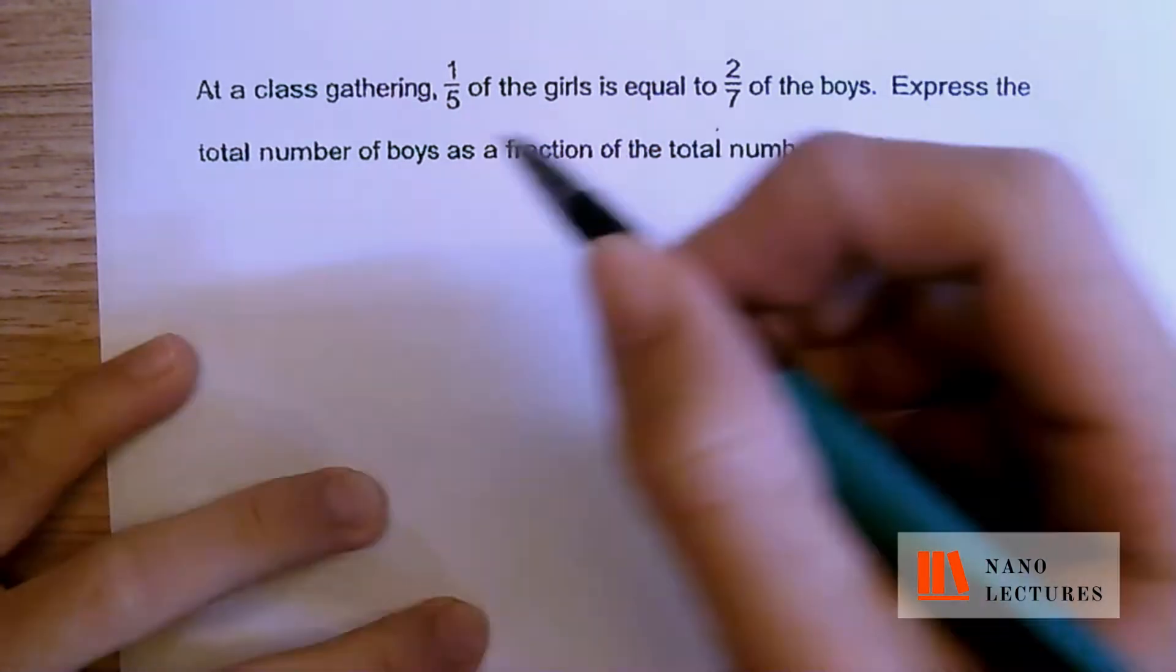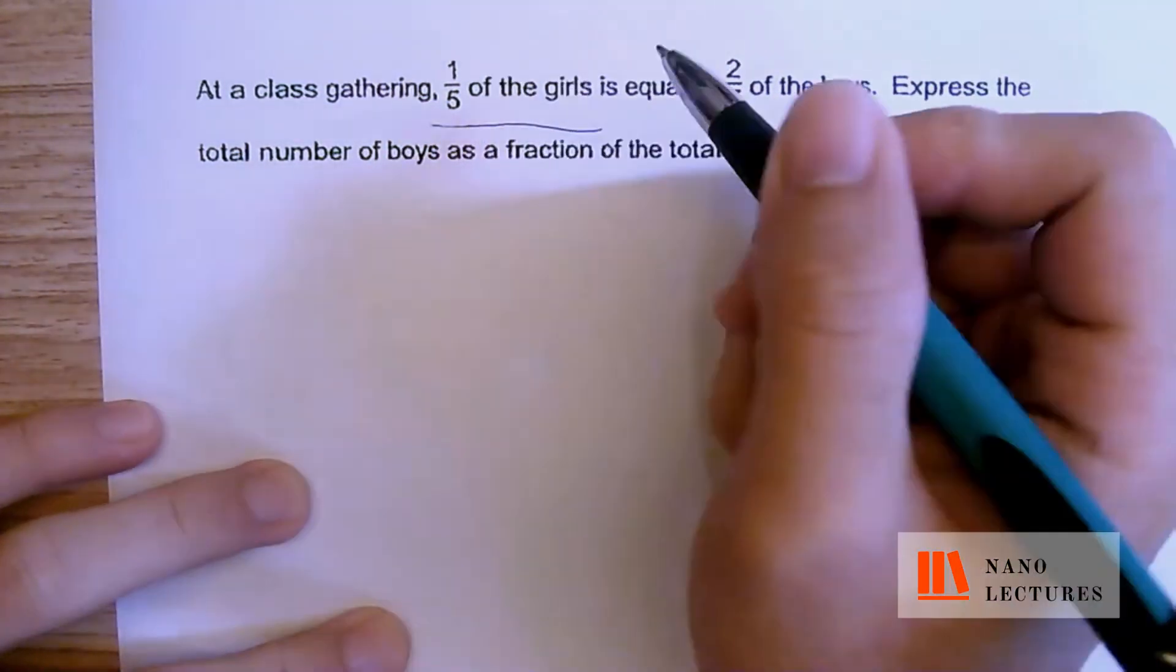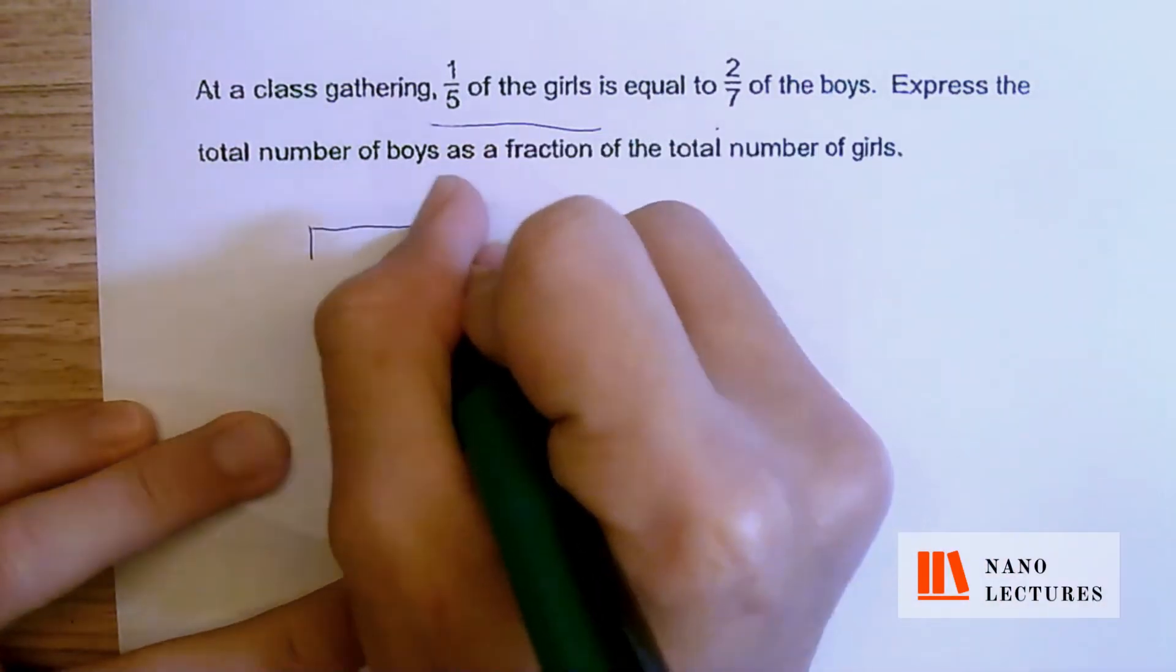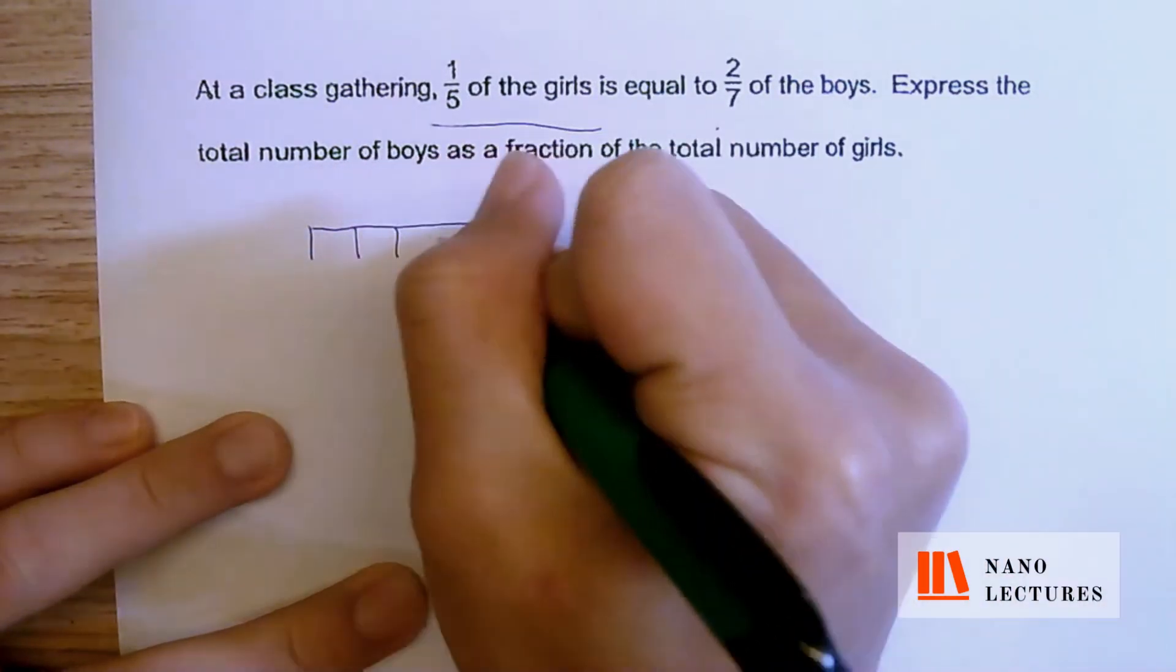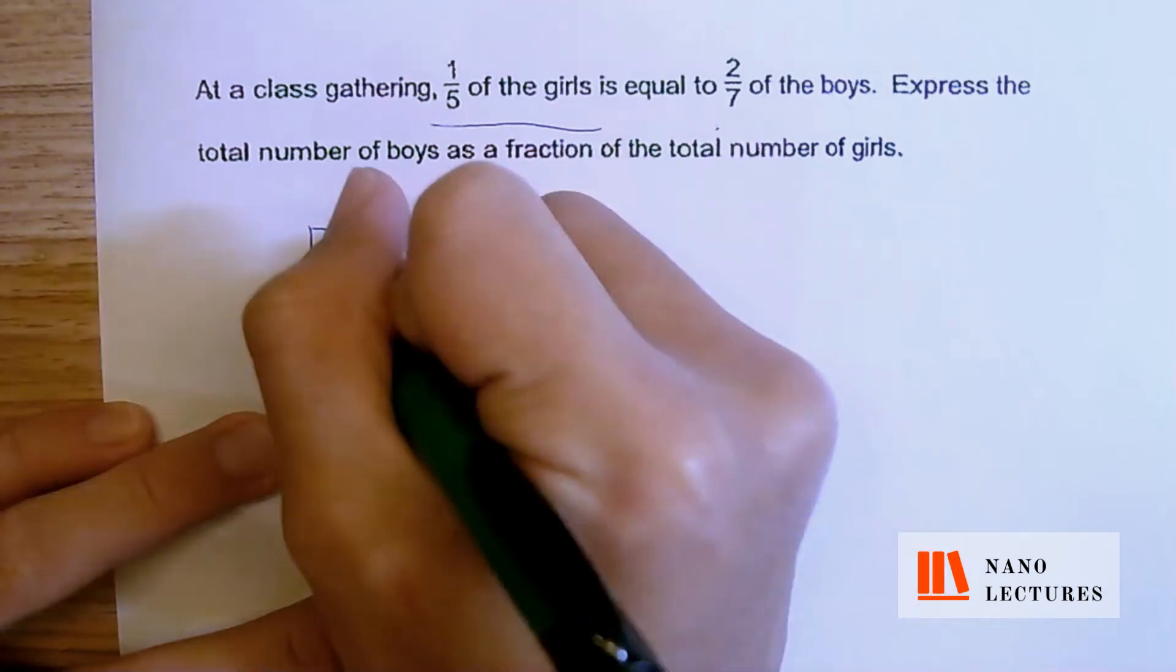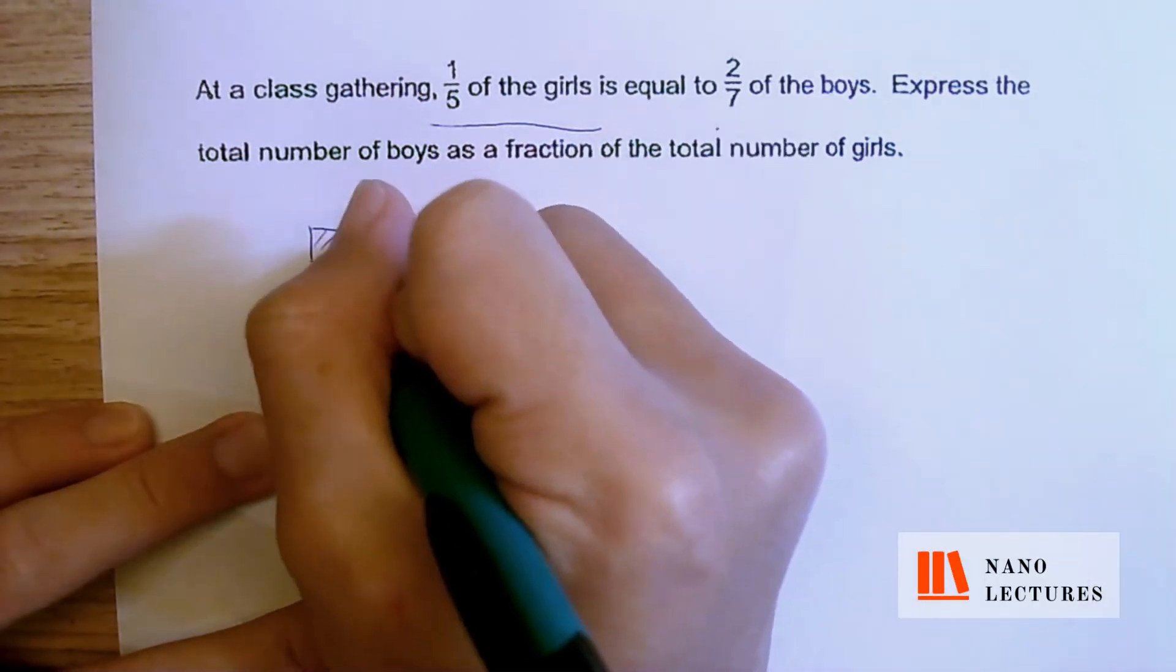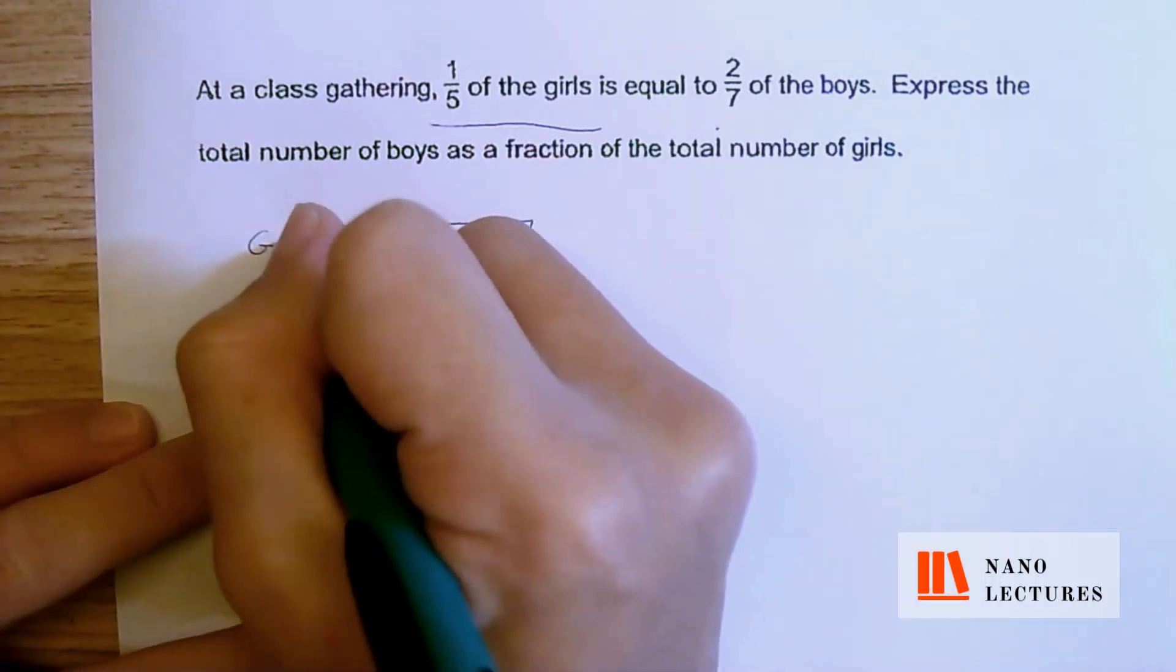So let's just go ahead and draw the models. We're going to draw the girls first, so they say that one-fifth of the girls. So for the girls, we're going to draw 5 parts. So just go ahead and draw 1, 2, 3, 4, and 5. I'm going to shade one of the five. I'm going to put G here to represent girls.